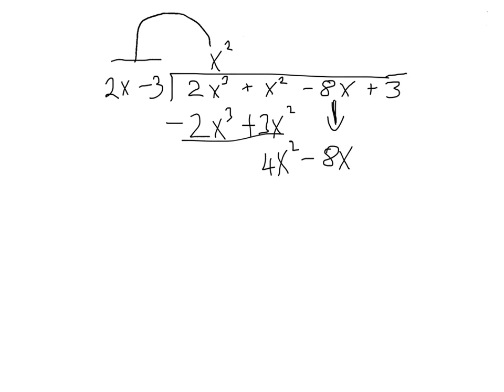So 2 into 4 goes twice, and x into x² goes x times. Notice if this is x², then the next term will always be x, and we should expect this term to be just a number, a constant.